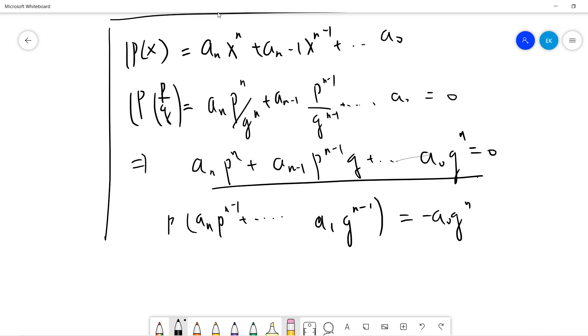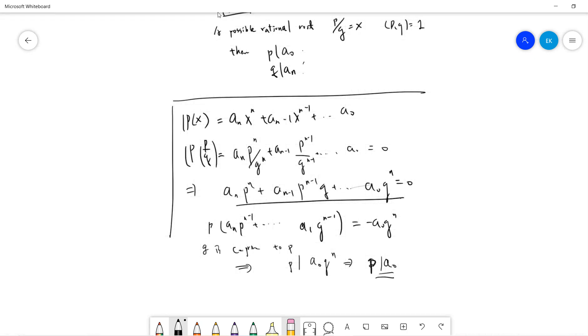So we know that q is coprime to p. Multiplying by q^n, we get: an*p^n + an-1*p^(n-1)*q + ... + a0*q^n = 0. From this, we can rearrange to: p(an*p^(n-1) + ... + a1*q^(n-1)) = -a0*q^n. We know that q is coprime to p, so from this we know that p must divide a0*q^n. But p is coprime to q, so p must divide a0.